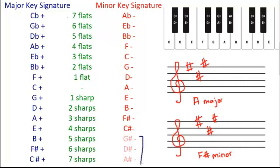I want to direct your attention to these three faded out at the bottom here: G-sharp minor, D-sharp minor, and A-sharp minor. The reason I've faded them out is that, in my experience, composers don't tend to write in these keys. This is because if they wish to use those notes, they tend to use the enharmonic equivalents. So they tend to write in A-flat, E-flat, and B-flat minor instead. I've also faded those out because they don't fit the pattern of how I'm going to teach minor key signatures.